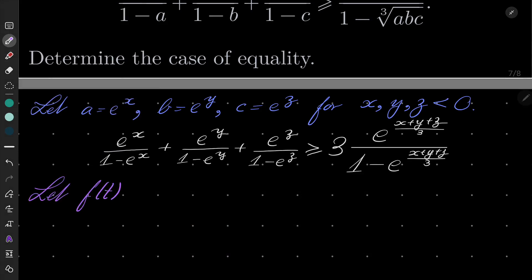Let f of t be equal e to the power of t over 1 minus e to the power of t for negative numbers.